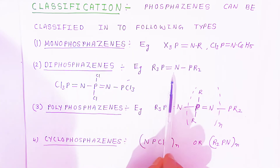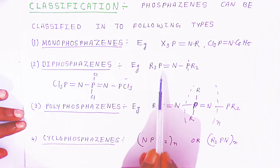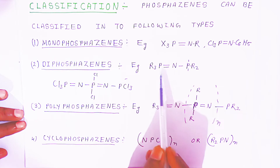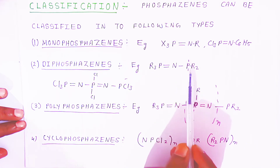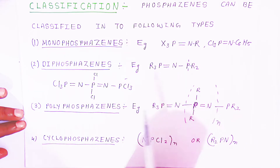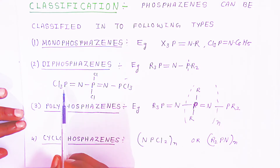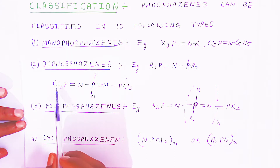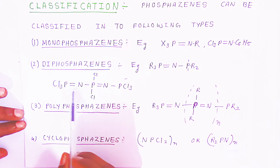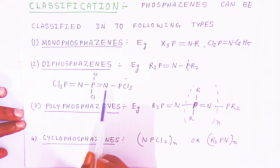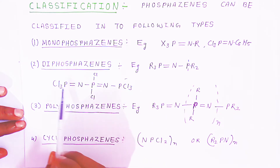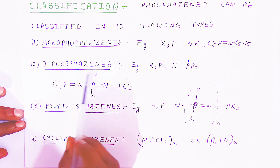In Diphosphazenes there are two units. For example, where R is an alkyl group, there is a Phosphorus-Nitrogen double bond and a Nitrogen-Phosphorus single bond. Another example: Phosphorus with three chlorides forms a P=N double bond, then a N-P single bond, then again a P=N double bond and N-P single bond. These are the Diphosphazenes.